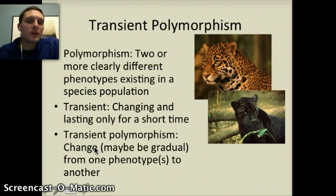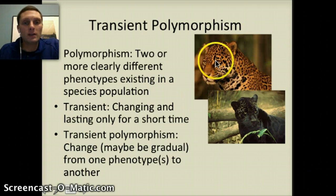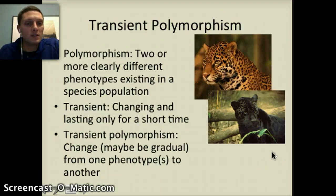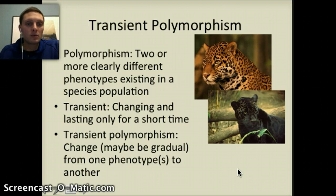The next topic is transient polymorphism. Polymorphism means two or more clearly different phenotypes existing within a species population. Transient means changing and lasting only for a short time. Put together, it means a change that may be gradual from one phenotype or set of phenotypes to another. We're going to look at a couple of examples to finish up this first video on speciation.